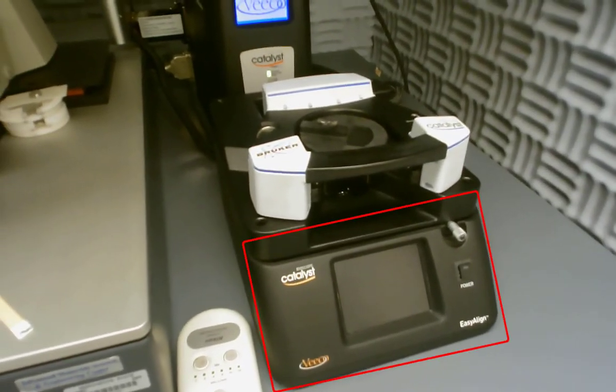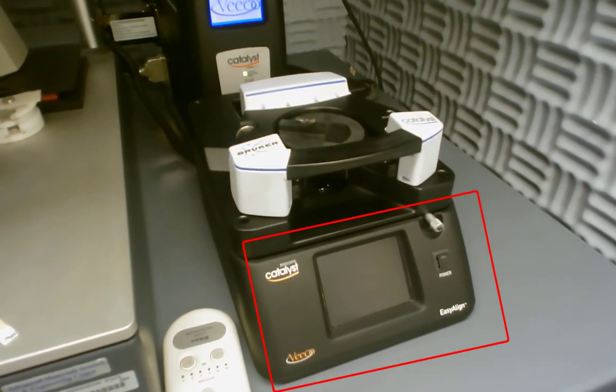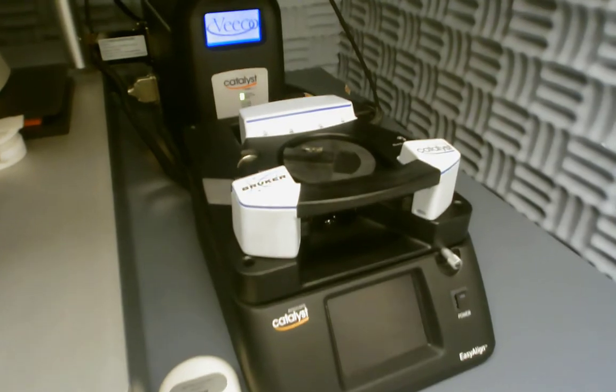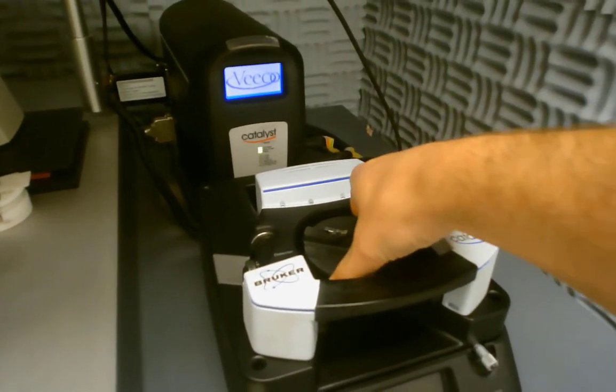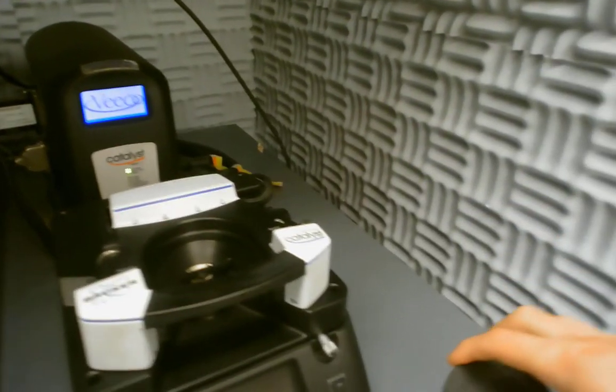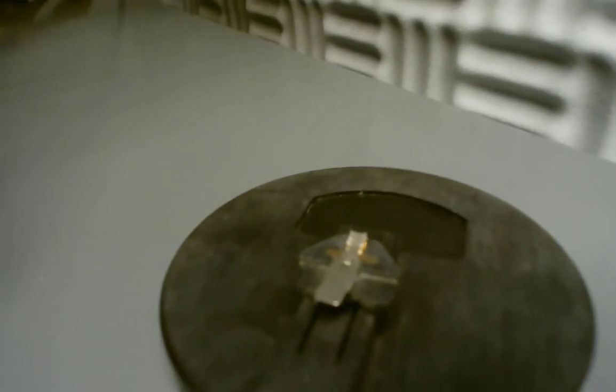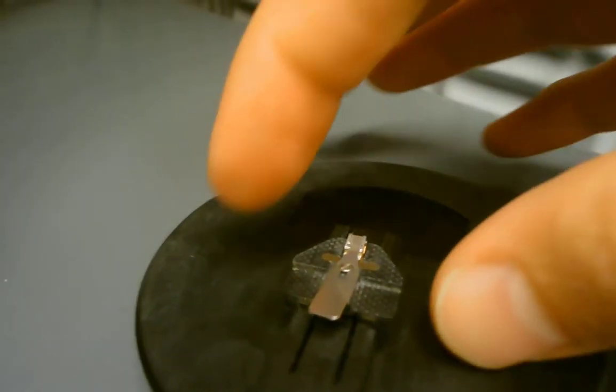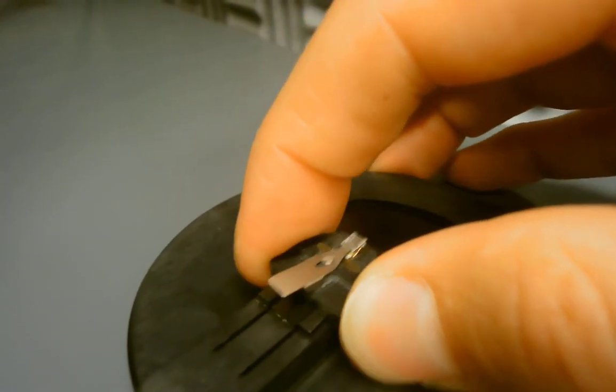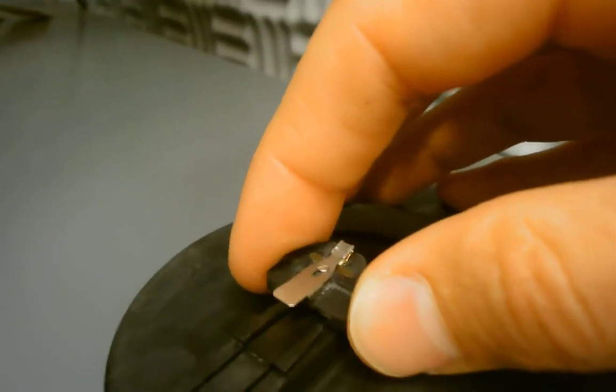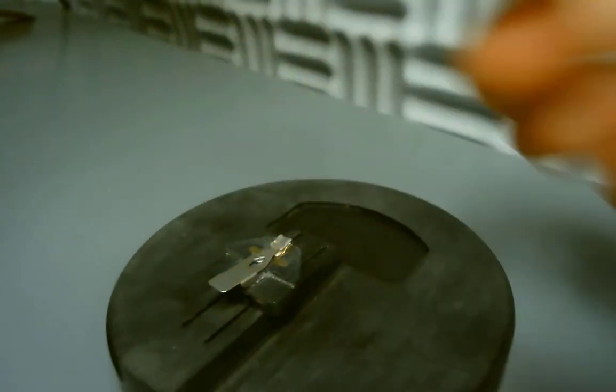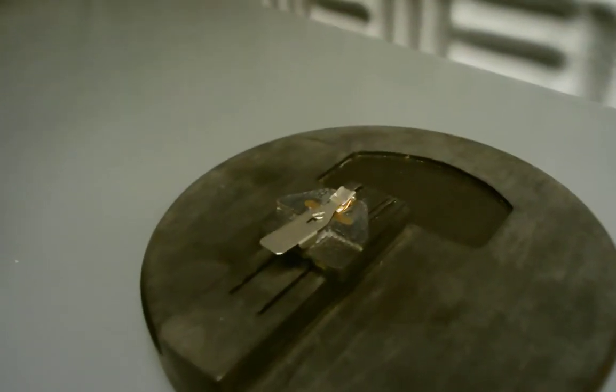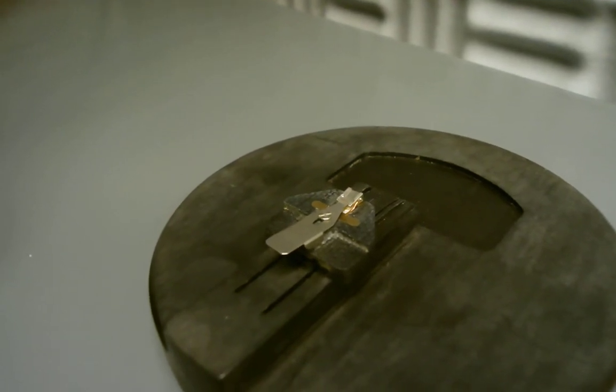Down on the right we have our easy align system for lining up the laser and the cantilever. The tip will be mounted, I'm going to refocus this. The tip will be mounted here. So this tiny little piece is the tip holder. And it's mounted on this black disc just because it's so small that this helps us handle it without dropping it.